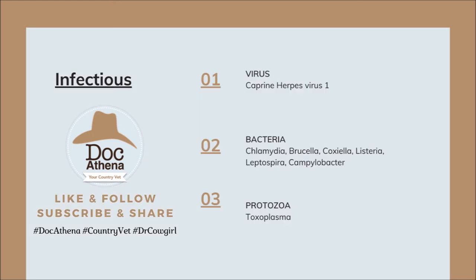For this topic, we will focus more on the infectious causes of abortion. These could be viral, bacterial, or protozoal. For the virus, we will only discuss caprine herpesvirus 1. For bacterial causes, it could be chlamydia, brucella, coxiella, listeria, leptospira, or campylobacter. As for protozoa, it could be toxoplasma.